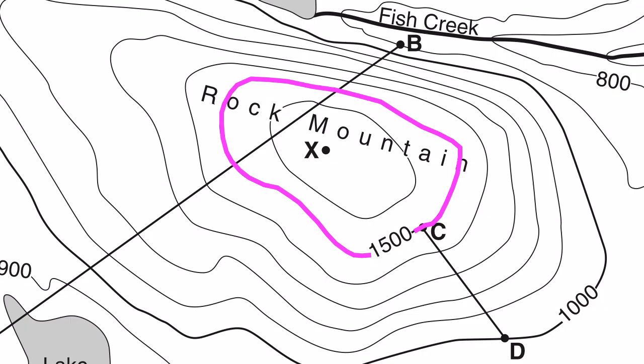Now, by doing a little bit of math in my head, I can see that the interval on this map is 100. And what that means is that this next line would be at an elevation of 1600.